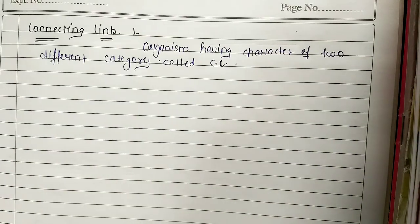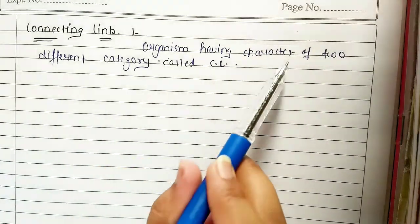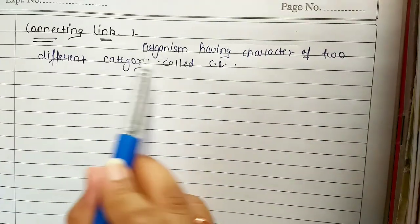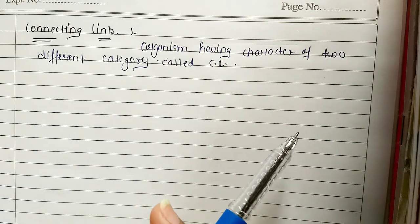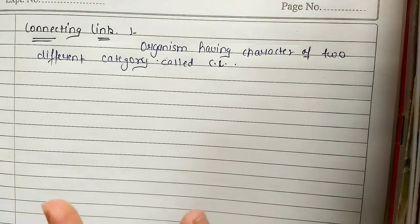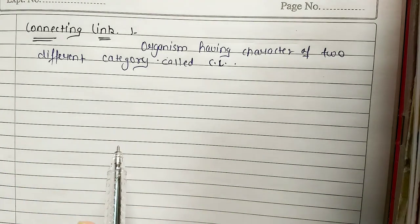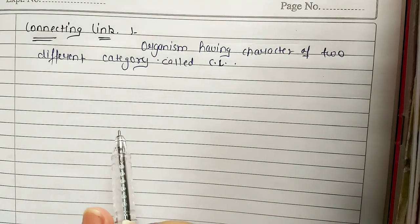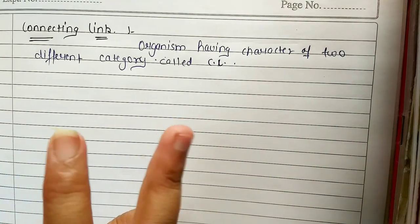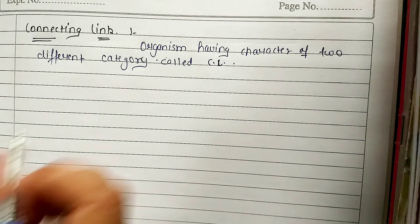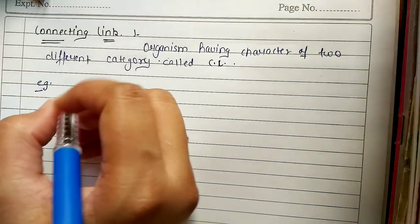Now we do connecting link. Connecting link: what is an organism having characters of two different categories? This is an organism that has characters of two different categories. If we get one organism that has characters of two particular groups, it is called a connecting link — it means it connects two categories. Let's learn the best example.